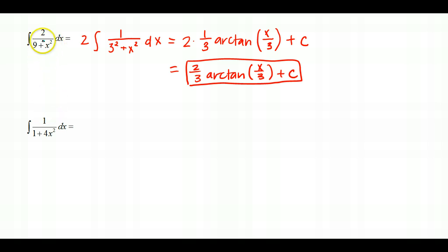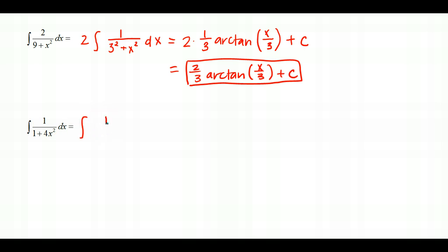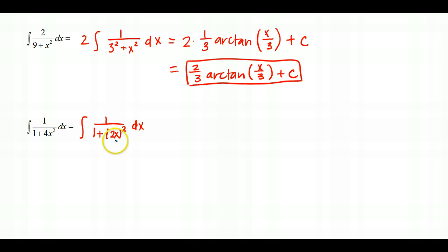The next problem has a similar form: a constant on top and two perfect squares being added on the bottom. Rewriting the integrand as 1 over 1 plus the quantity 2x squared, this looks like the arctan formula. However, the formula requires a squared plus x squared with just one variable squared — here we have 2x squared, which is a function squared. So we need a u-substitution.